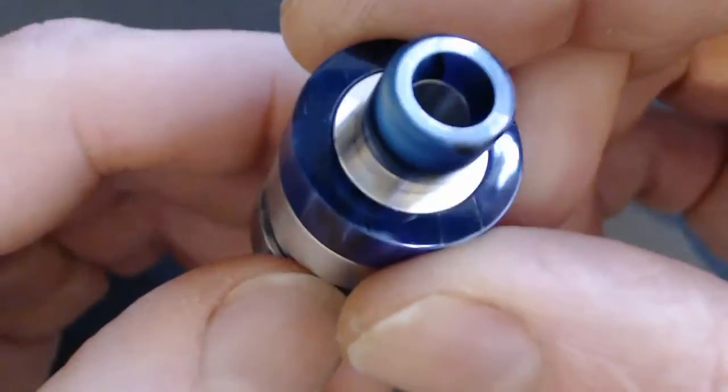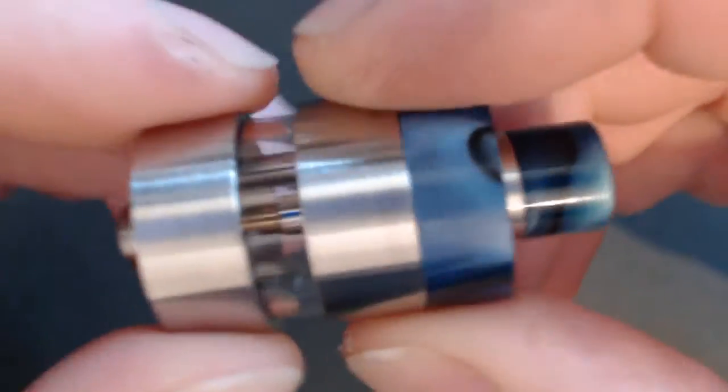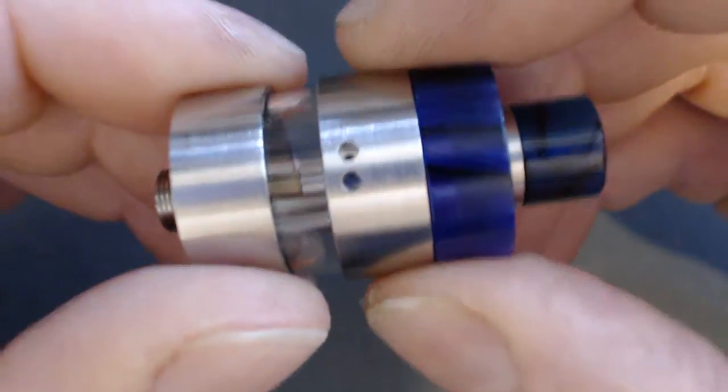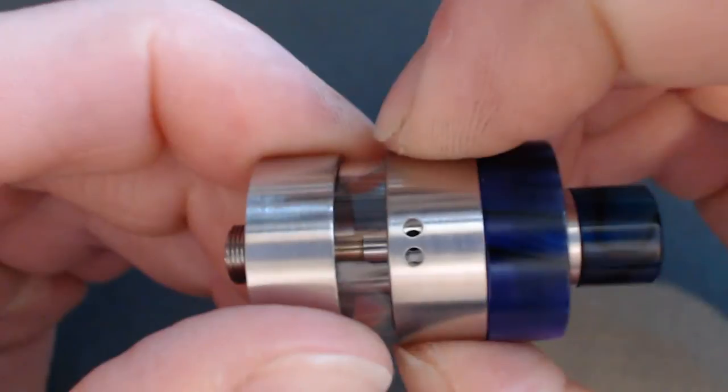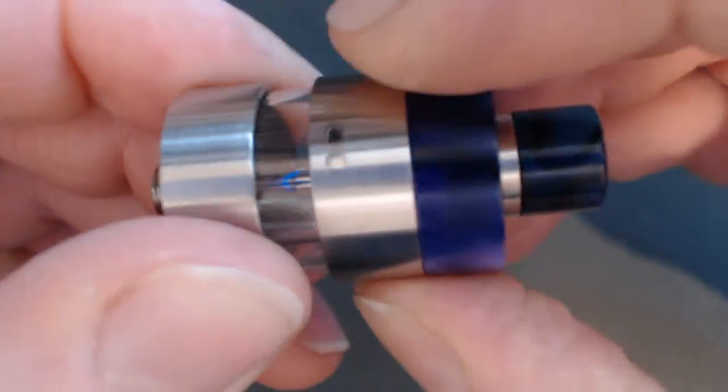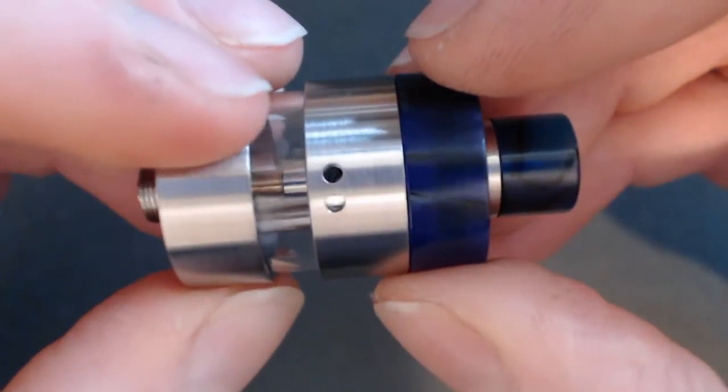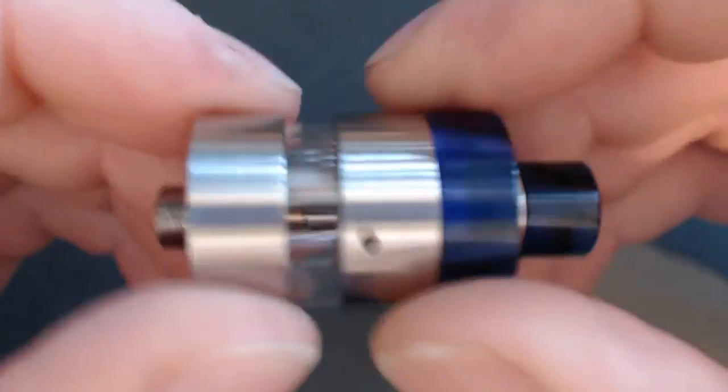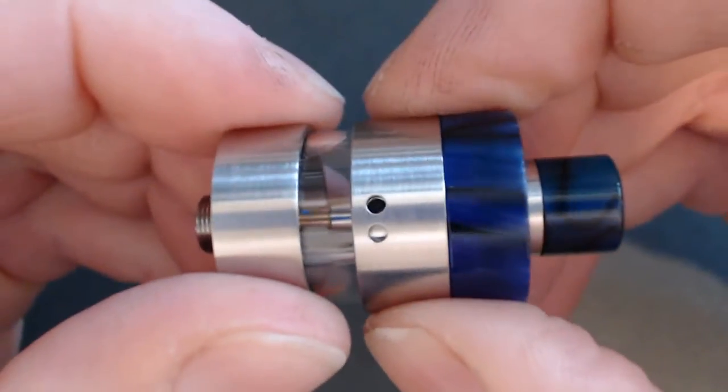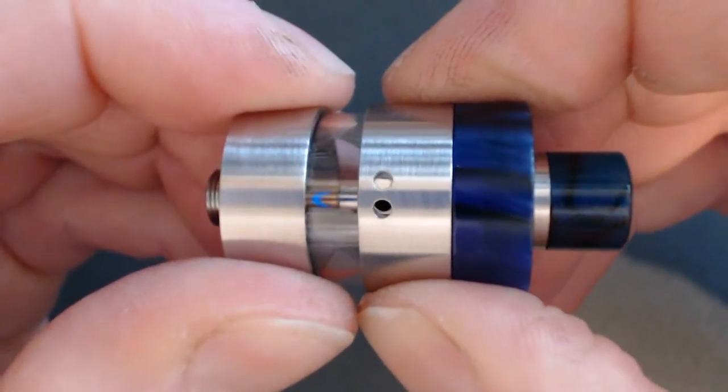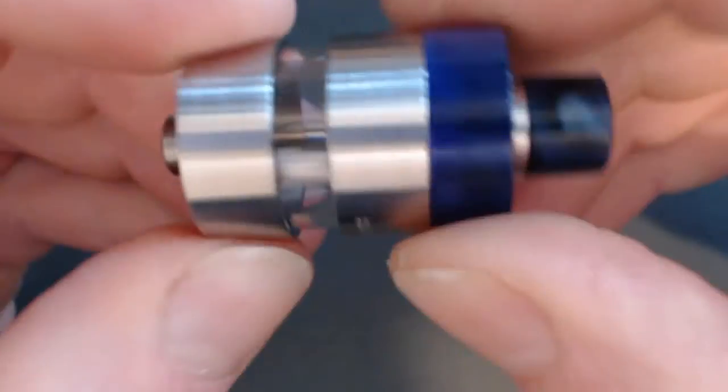I think it is 316 stainless steel as opposed to 304 stainless steel. We have two airflows on this side and one on this side, so when it's lined up like so you've got an airflow on each side. If you want less airflow you can adjust it accordingly.